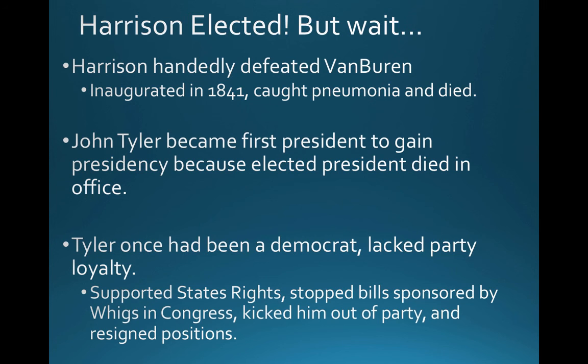In the first instance of a vice president becoming president due to the president's death in office, John Tyler became president. Tyler had previously been a Democrat, so there was a lack of party loyalty. The Whigs hadn't really elected Tyler — they had elected William Henry Harrison, and Tyler was just on the ticket. Tyler was different from the classic Whig platform, and as a result he stopped some bills sponsored by Whigs in Congress. They essentially kicked him out of the party, and he resigned positions as a result.